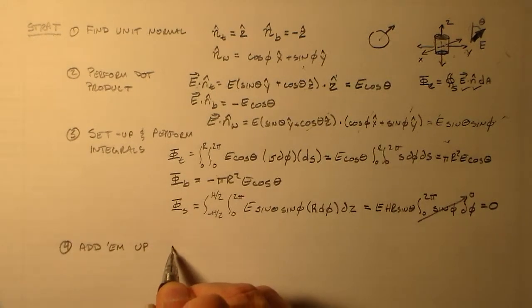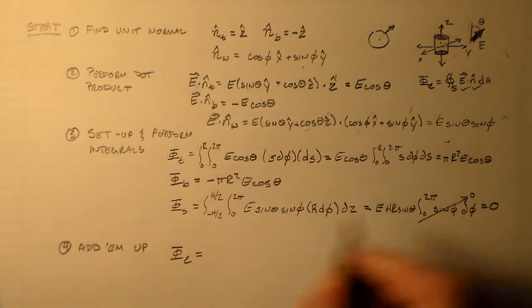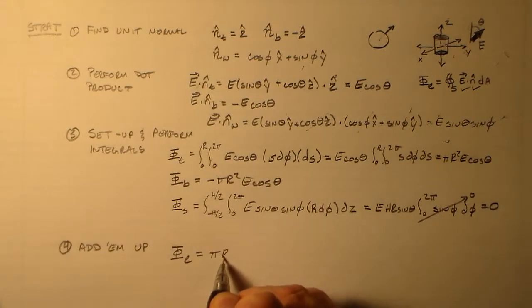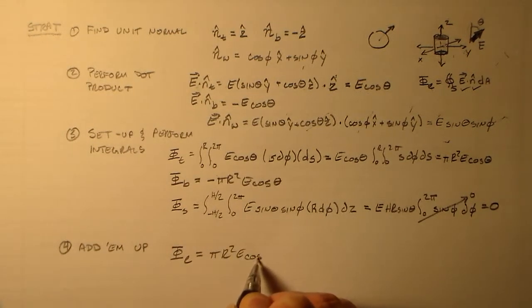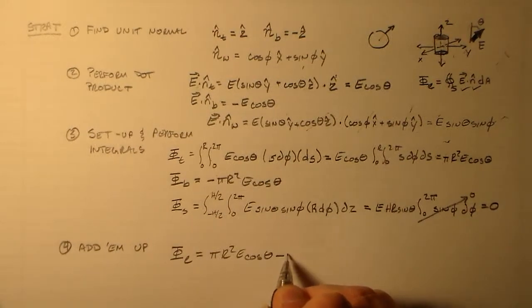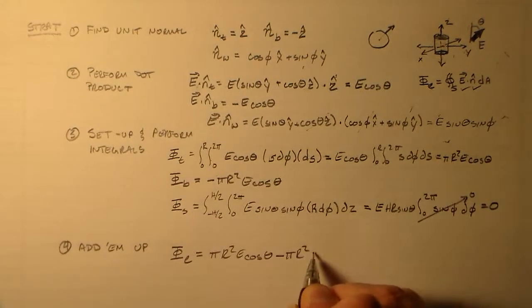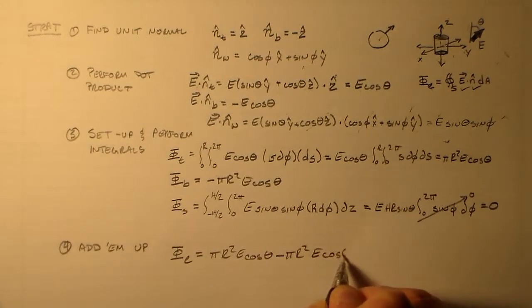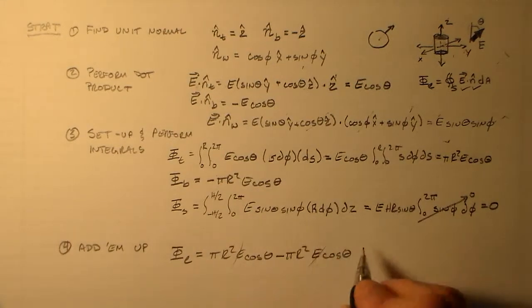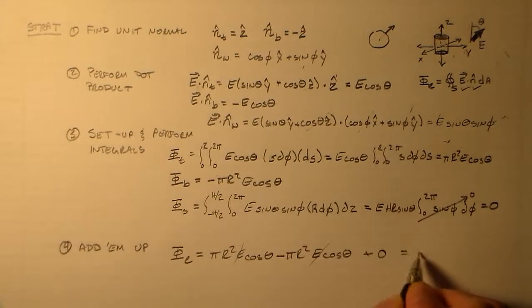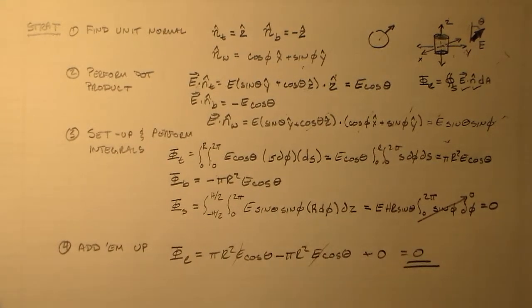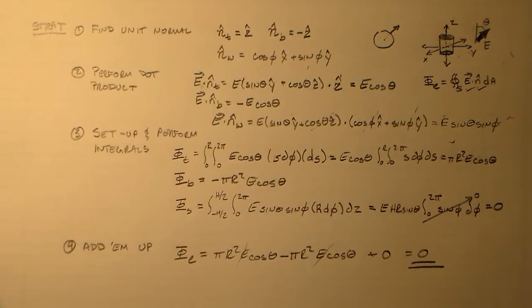So we're in good shape. It looks like we have exactly what we expect. So we add in the pi r squared e cosine theta, right? Then we add in the minus r squared e cosine theta. Oh, these two guys cancel. And then we add in the zero and everything's zero. So there's no flux through there. Just like we said, we already knew. So we're good with that. Okay? Talk to you later.